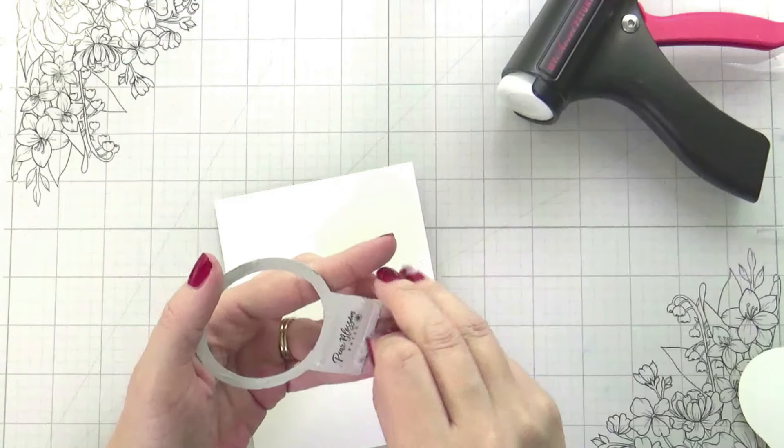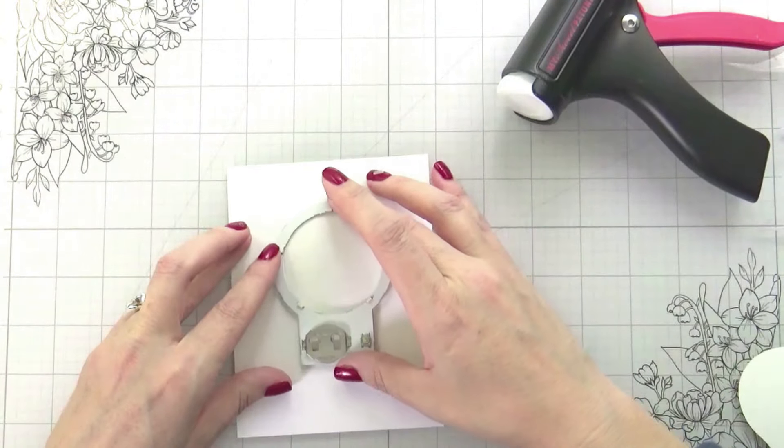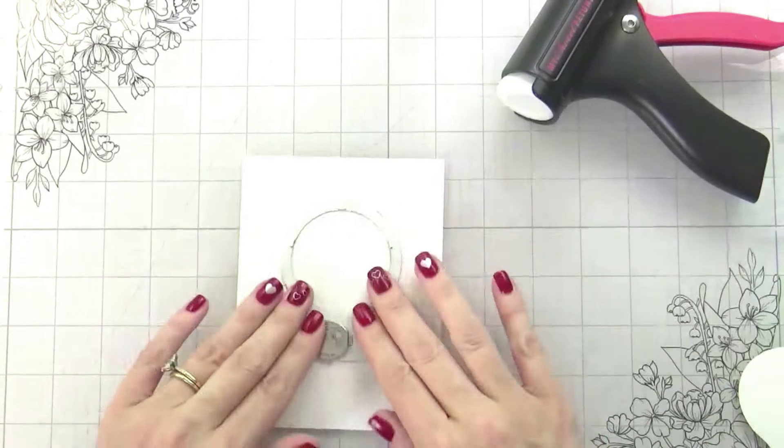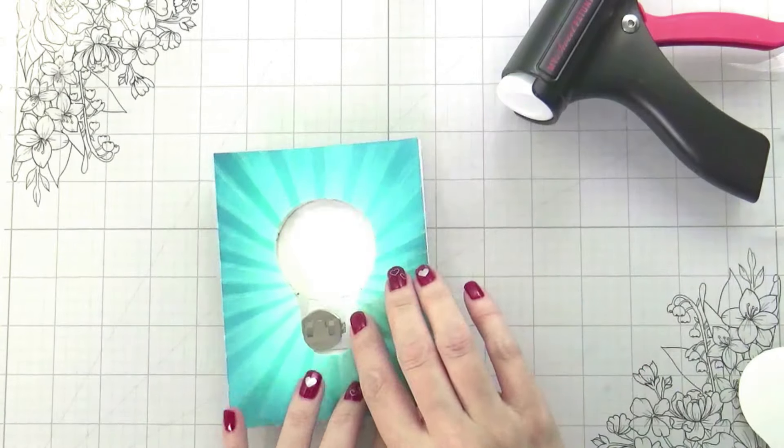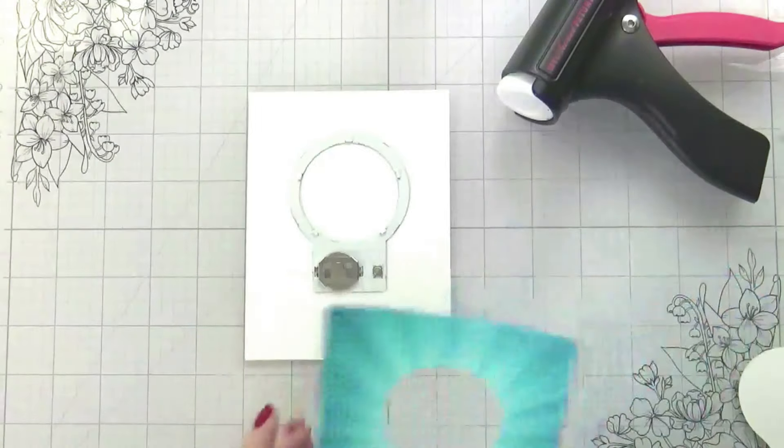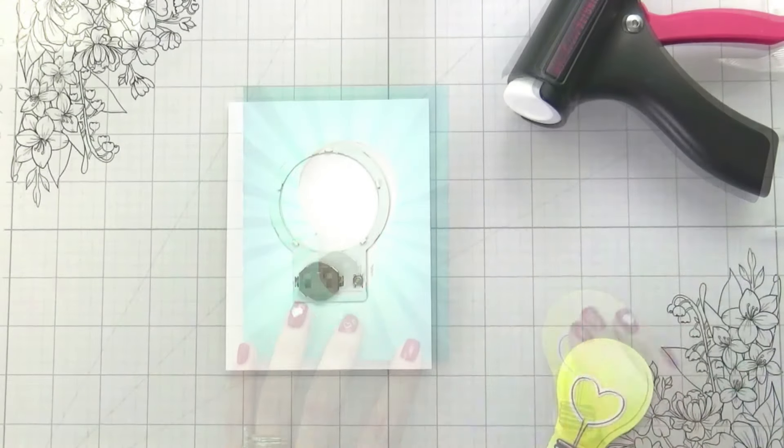Once I peel the release paper off, I'm going to stick that in right exactly where my traced portion is. And then of course, as you're doing interactive cards, we're always constantly testing and playing because you want to see how it looks. So that's what I'm doing there.